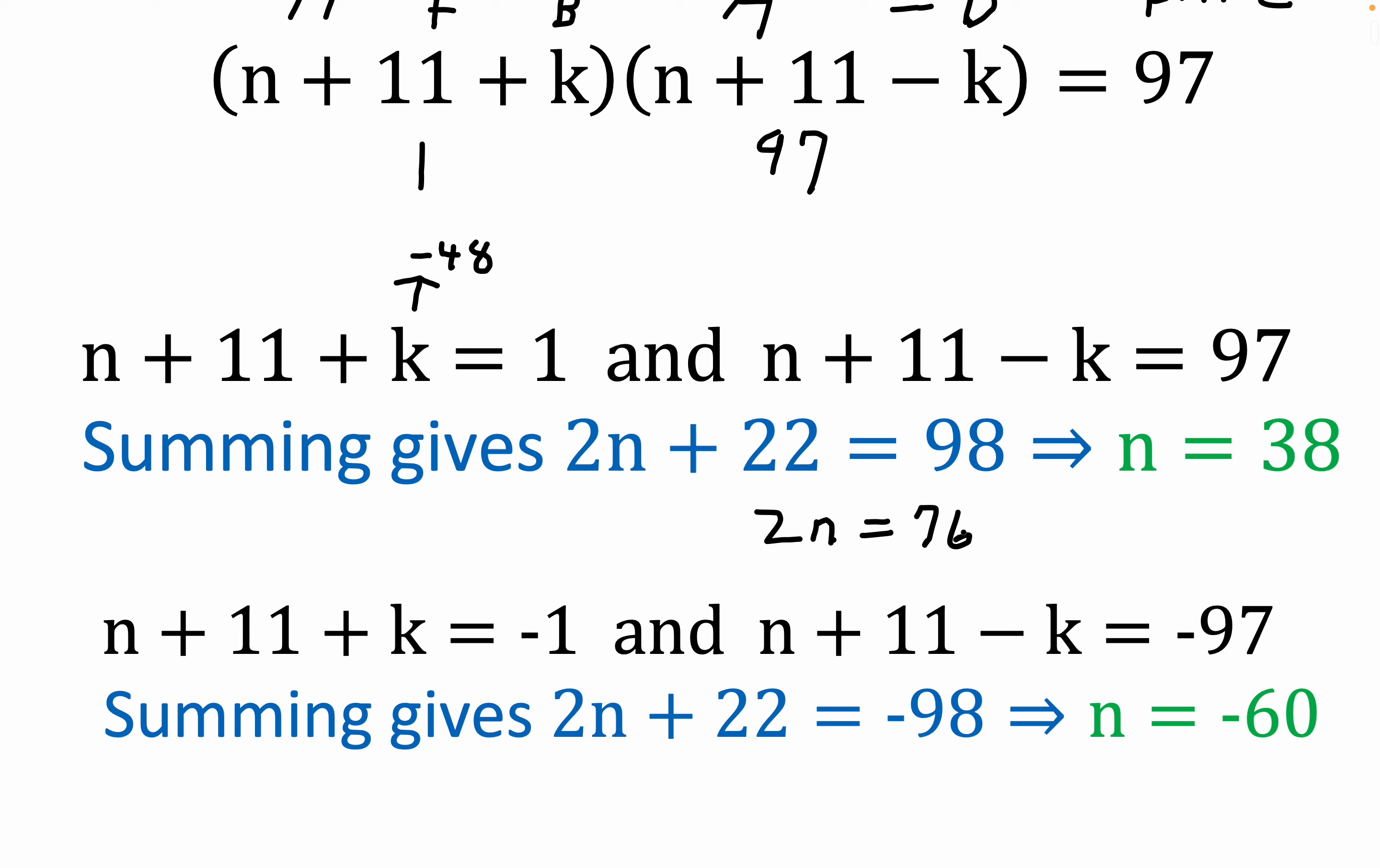Now another way to look at this is minus 1 times minus 97. That's a legitimate factorization. Let me make this clear. That's exactly what we did right here. Notice the minus 1 and the minus 97. This case 1 and 97 was the top case. If you go through the arithmetic on this, you get n equals negative 60.